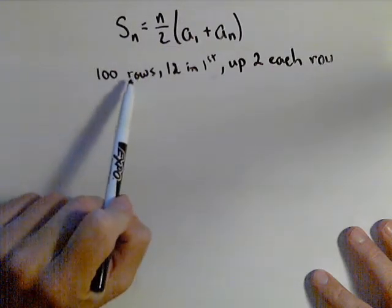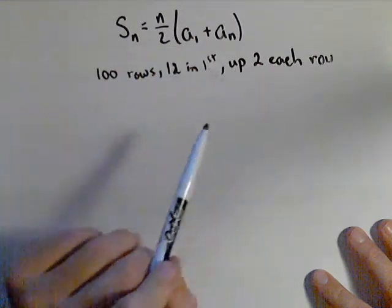Here's what we know about our auditorium. It's got 100 rows, 12 seats in the first row, and it goes up two each row.